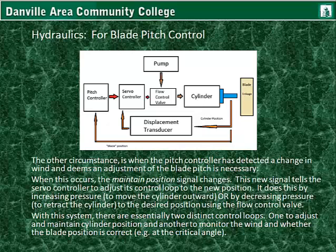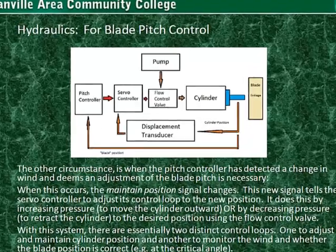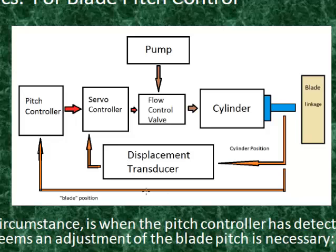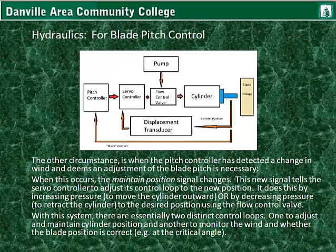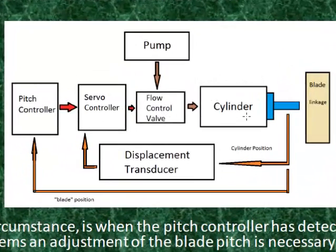The other circumstance is when the pitch controller detects a change in wind and deems an adjustment of the blade pitch necessary. When this occurs, the maintain-position signal changes, telling the servo controller to adjust its control loop to the new position. It does this by increasing pressure to move the cylinder outward or decreasing pressure to retract the cylinder to the desired position, by controlling the flow control valve. With this system, there are essentially two distinct control loops: one to adjust and maintain cylinder position, and another to monitor wind conditions and whether the blade position is correct — the servo controller adjusts the flow control valve, and position feedback is sent back through the displacement transducer.